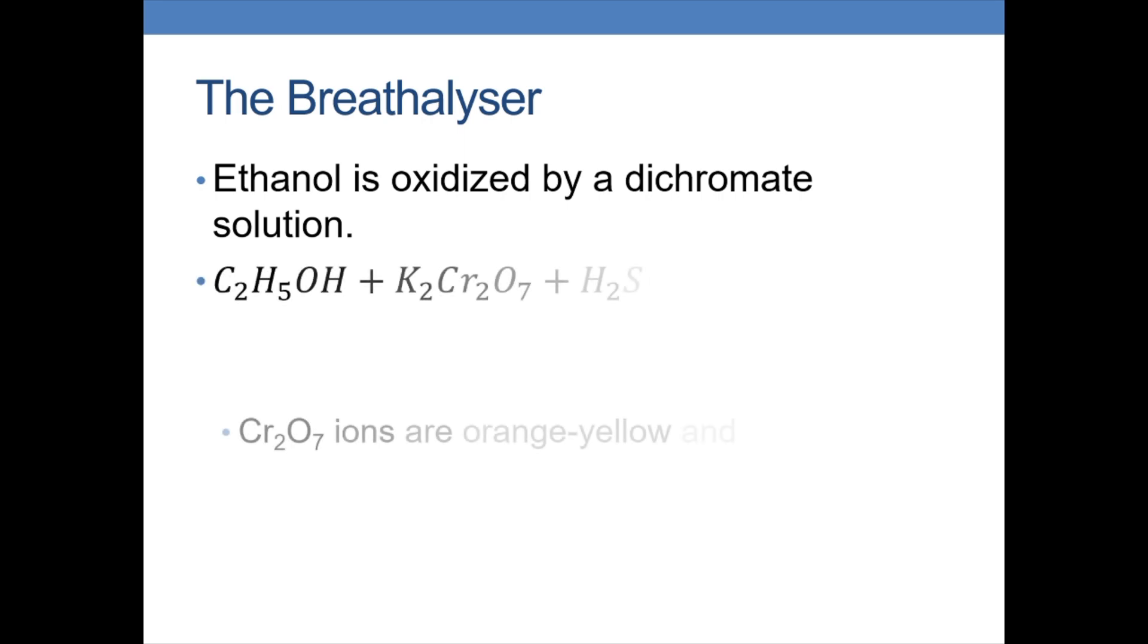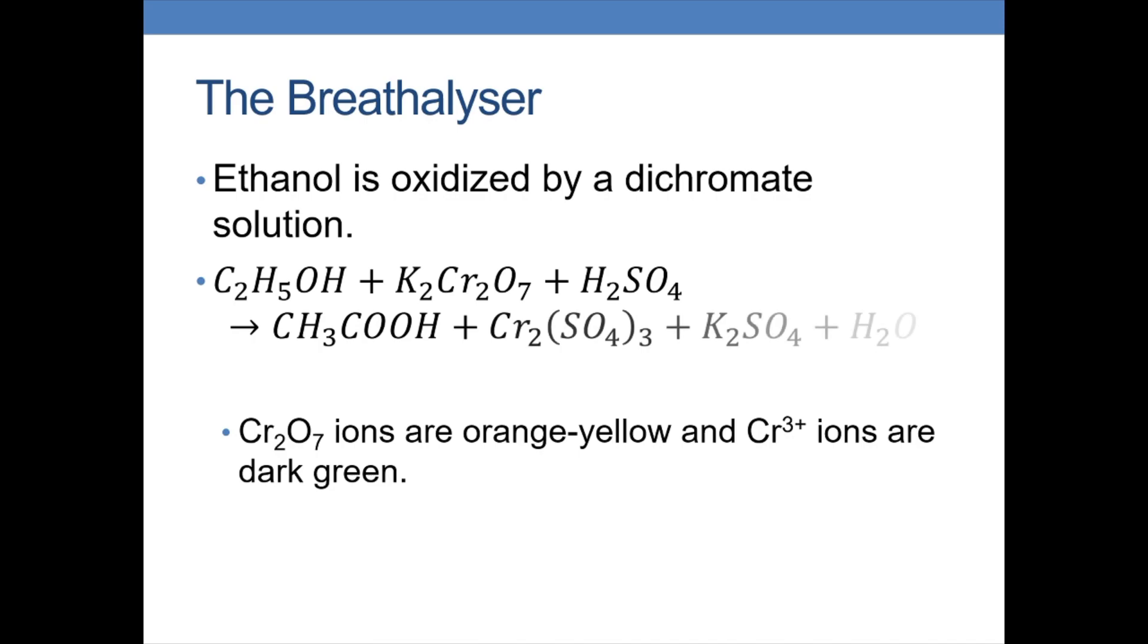The breathalyzer works by using dichromate solution to oxidize ethanol. Ethanol is the main component in most consumable alcohols. There are other alcohols like methanol and propanol, but ethanol is the one present in most alcoholic beverages. The breathalyzer has potassium dichromate, and in the presence of ethanol, the ethanol gets oxidized and the dichromate becomes chromium sulfate.